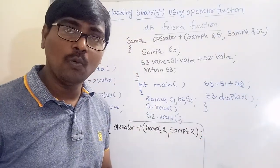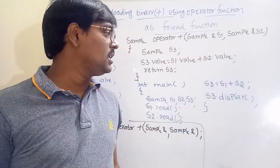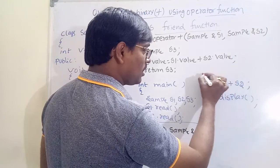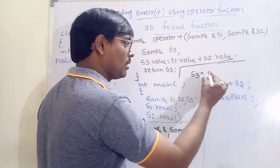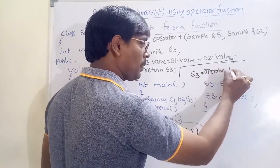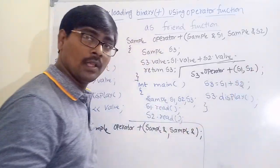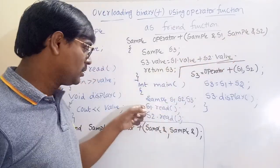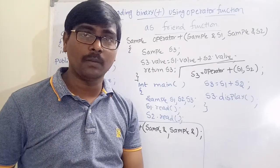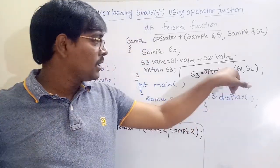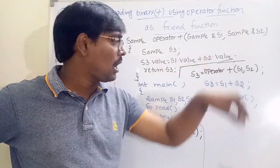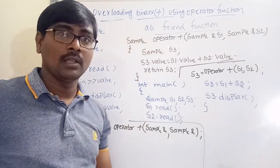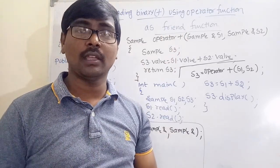The program is complete. Whenever you write the statement s3 = s1 + s2 with a friend function, the system calls it as: s3 = operator+(s1, s2). The value of s1 is passed to the first object and s2's value to the second. For example, passing values 3 and 4, the addition is performed. In contrast, for a member function the same statement maps to: s1.operator+(s2), where only the second parameter is passed.